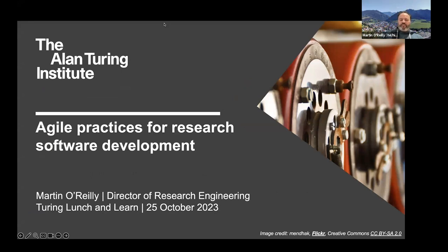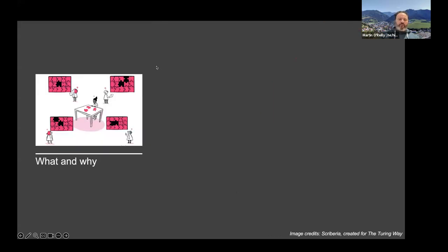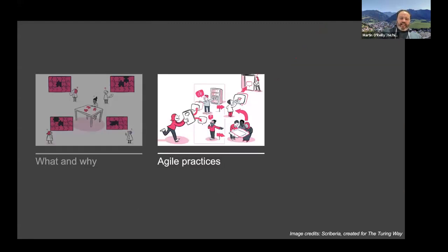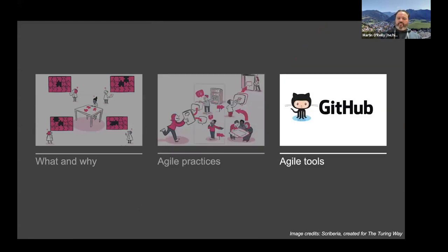Today I'm going to talk about agile practices for research software development. I'm going to cover three things: what agile is, why it came about, and why you should care about it; some agile practices — the things that people do and that we've adopted in REG and others at the Turing; and some of the tools we use here at the Turing to put those into practice.